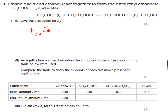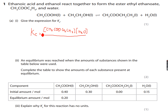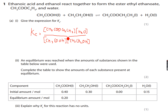So the Kc expression will be: concentration of CH₃COOC₂H₅ times the concentration of H₂O, divided by the concentration of CH₃COOH times the concentration of C₂H₅OH — each raised to the power of 1 because the stoichiometric coefficient is 1 in each case. So this is my expression for Kc.